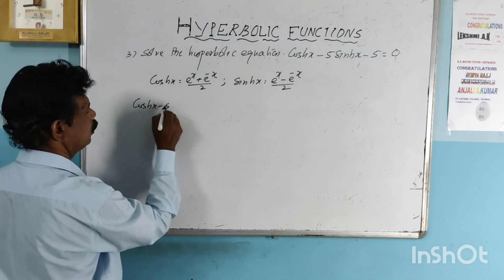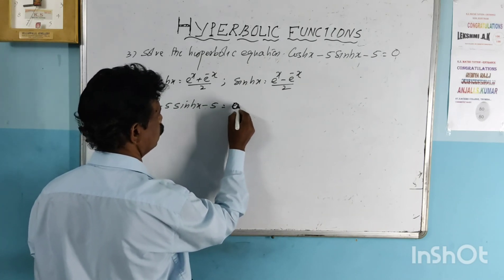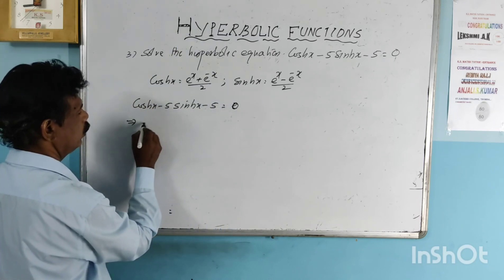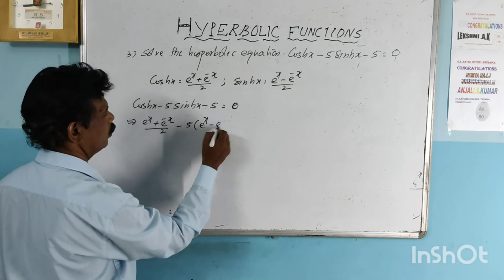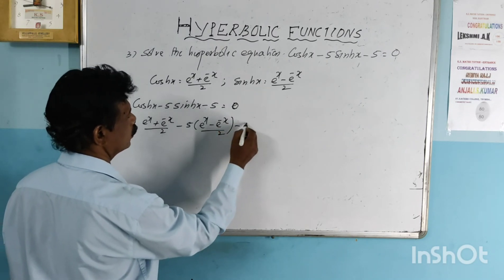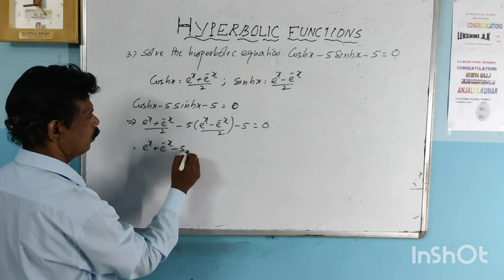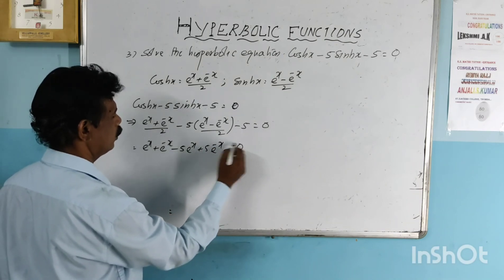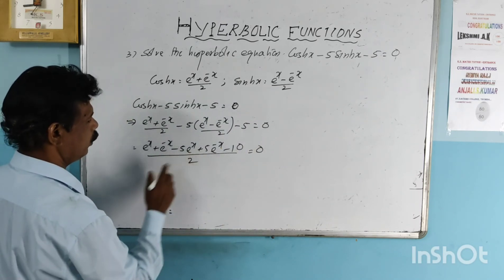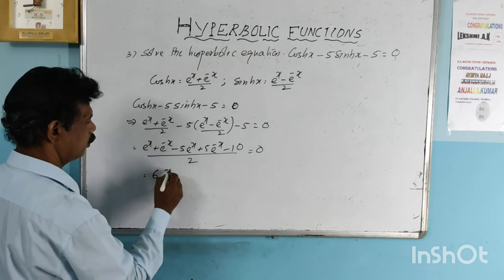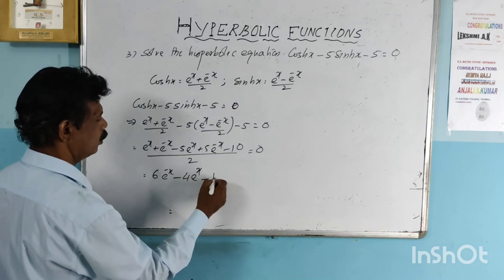Taking a common denominator of 2: e raised to x plus e raised to minus x minus 5 times e raised to x plus 5 times e raised to minus x minus 10, divided by 2, equals 0. Simplifying: e raised to minus x plus 5 e raised to minus x equals 6 e raised to minus x, and e raised to x minus 5 e raised to x equals minus 4 e raised to x. So we get 6 e raised to minus x minus 4 e raised to x minus 10 divided by 2 equals 0, which simplifies to 3 e raised to minus x minus 2 e raised to x minus 5 equals 0.